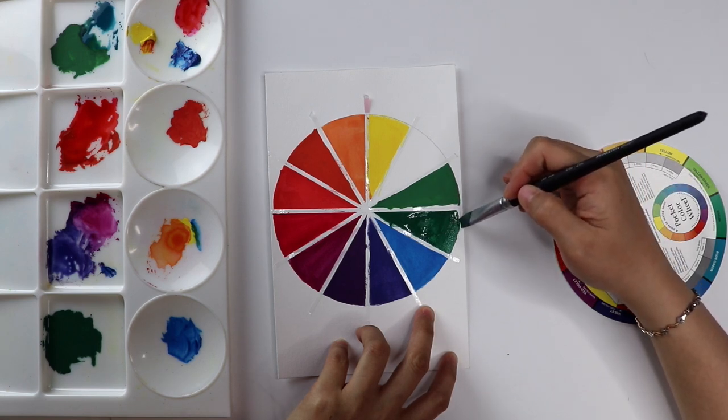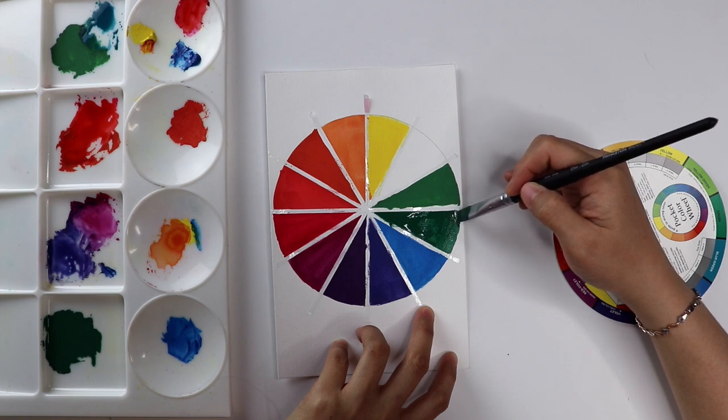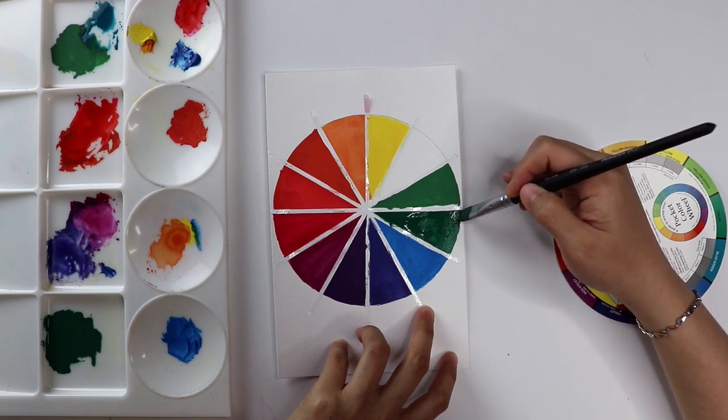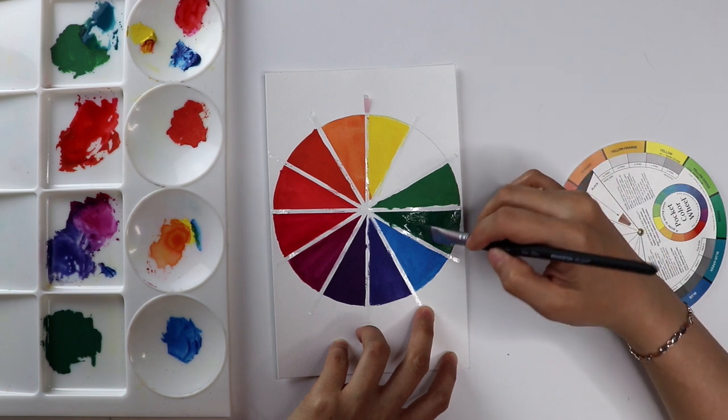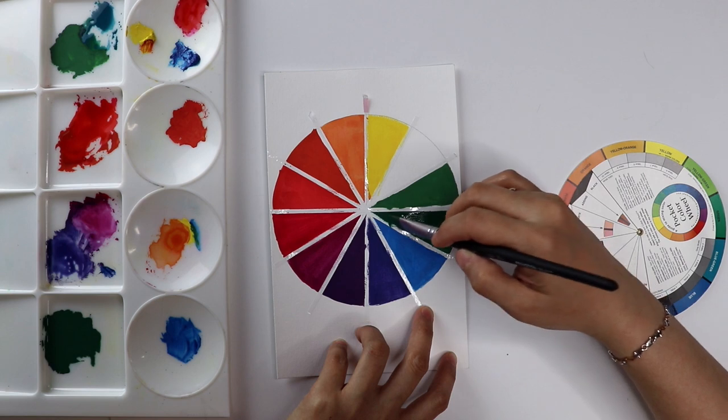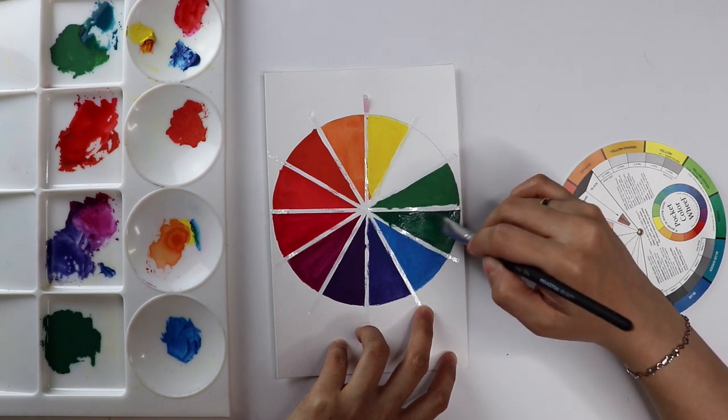More importantly, by using this color wheel, we're going to know the relationships between different colors. Things like what are considered complementary colors, what are analogous colors, and how to develop a harmonious color scheme.